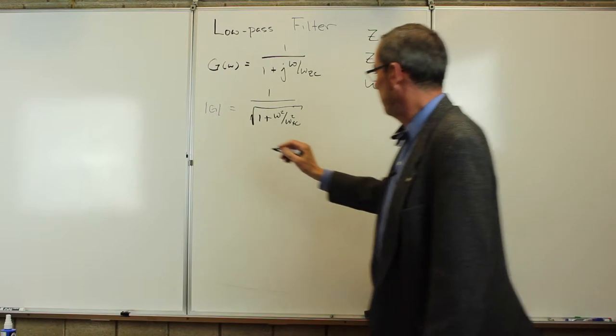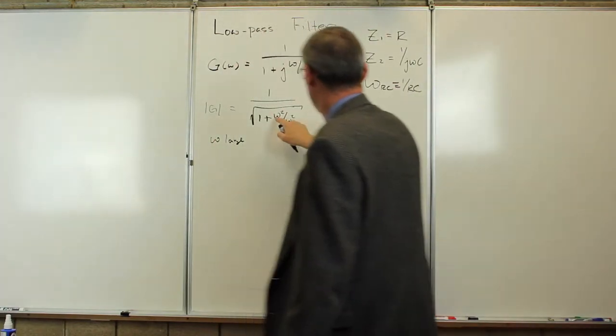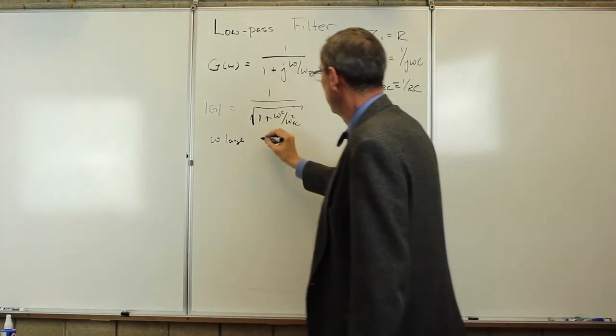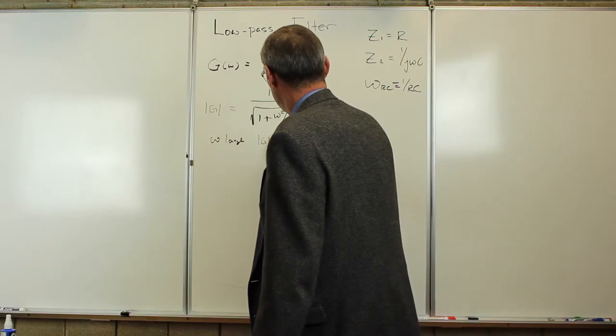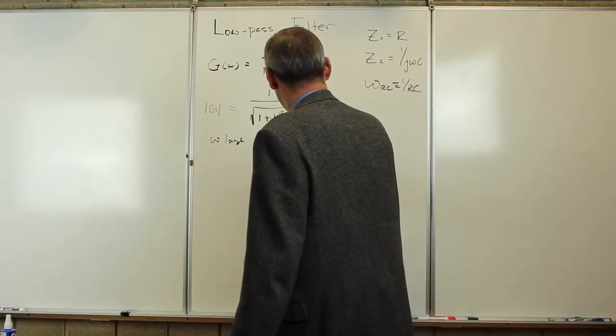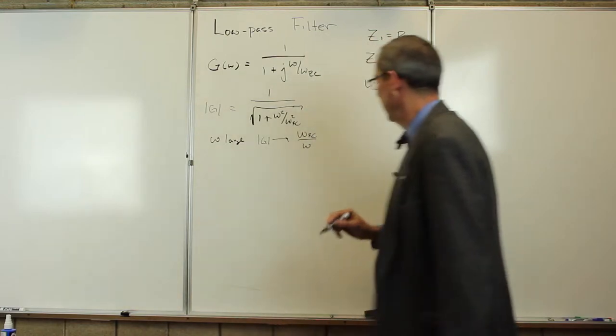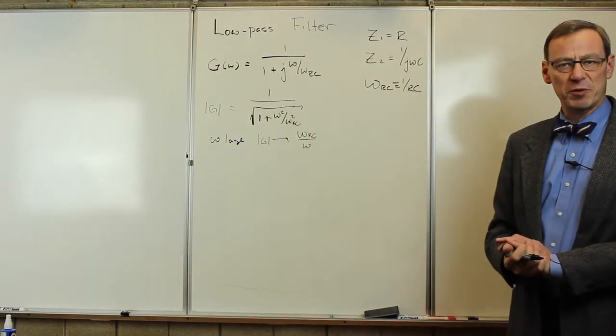If omega is large, then this term wins over this. And the gain, we can be a little more precise now, goes to omega RC over omega. It falls off like 1 over omega.